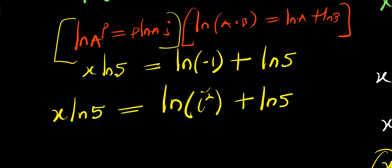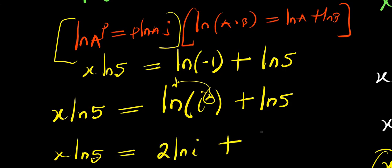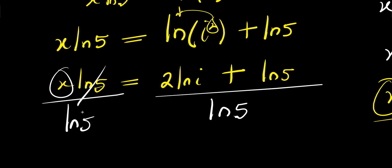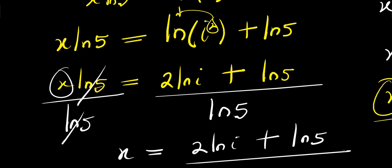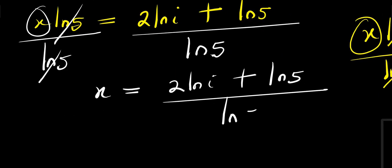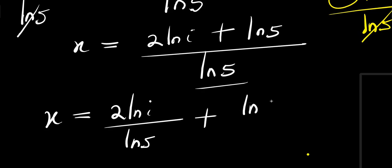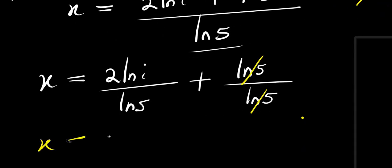Considering the log power rule, the exponent 2 comes in front. So we have x times natural log of 5 equals 2 times natural log of i plus natural log of 5. Now, isolating x, I divide both sides by natural log of 5. This gives x equals 2 times natural log of i divided by natural log of 5, plus natural log of 5 divided by natural log of 5, which simplifies to x equals 2 times natural log of i divided by natural log of 5, plus 1.